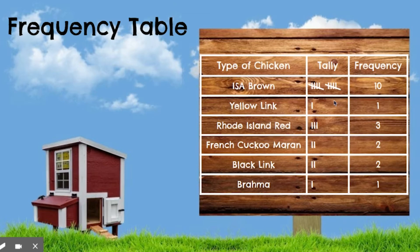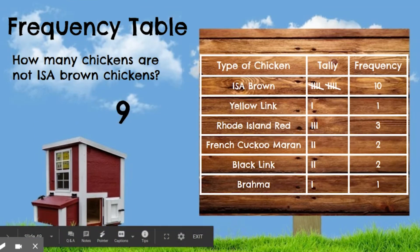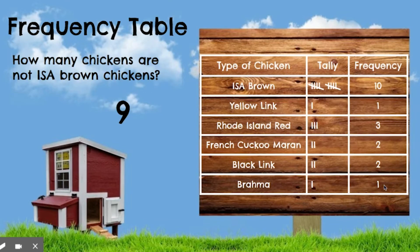Let's get to some questions you might come across with frequency tables. One example: how many chickens are not ISA brown chickens? Go ahead and pause and see if you can figure that out. If you want to know how many are not ISA brown, you count up all the other ones: one plus three is four, four plus two is six, six plus two is eight, eight plus one is nine. So our answer is nine chickens are not ISA brown chickens.